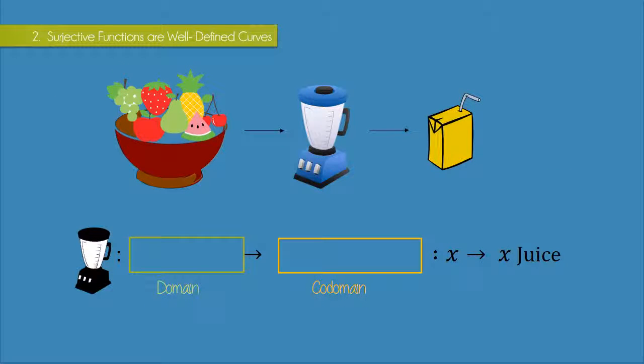Let's use another real life example of a function machine. This time to give some intuition about surjectivity. Again, I'm using this juicer as an example of a function. And what does this function do? Well, it takes in whole fruits or vegetables as an input and outputs the juice of that fruit or vegetable. So I've said here that x goes to x juice. So for example, if my input x was apple, then the output is apple juice.